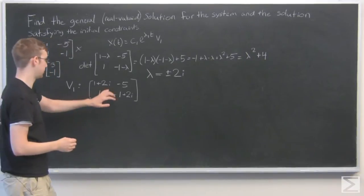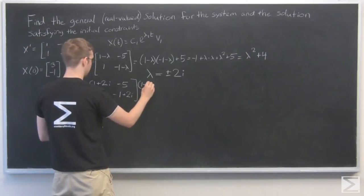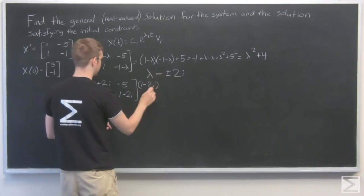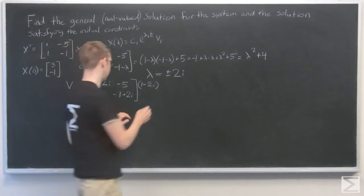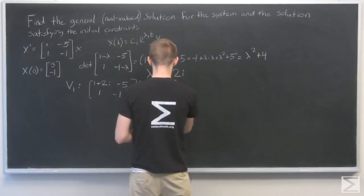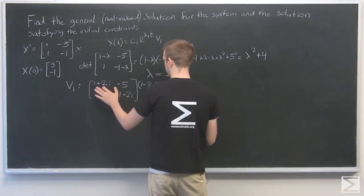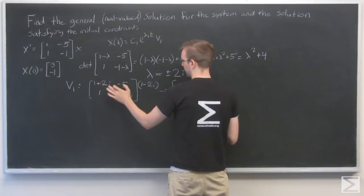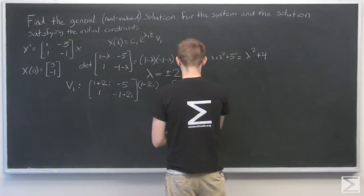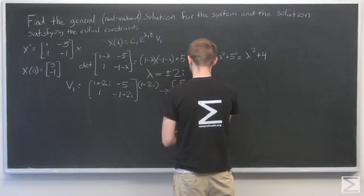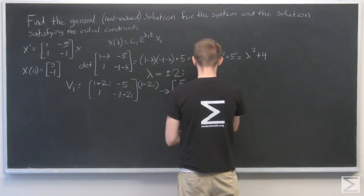So if I put -2i in as lambda, I get [1+2i, -5; 1, 1+2i]. I'm going to multiply the top row by 1-2i. That's the complex conjugate of this, and that'll make this number real-valued. So I get 1^2 - (4i^2), that's 1 + 4, so 5.